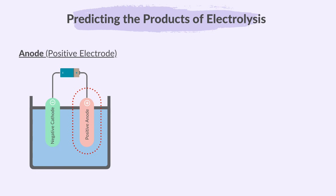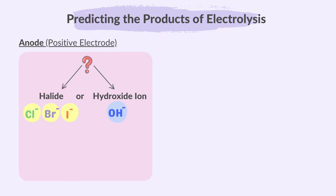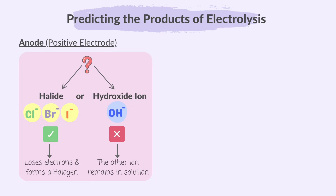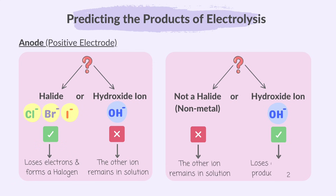What about the anode? During the electrolysis of an aqueous solution, it's either the hydroxide ion or a non-metal ion that gets discharged. If the choice is between a halide ion or a hydroxide ion, the halide is discharged at the anode, forming a halogen. If there is no halide, hydroxide ions are discharged at the anode. They lose electrons and produce oxygen gas.